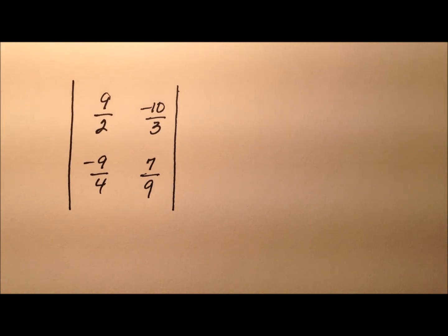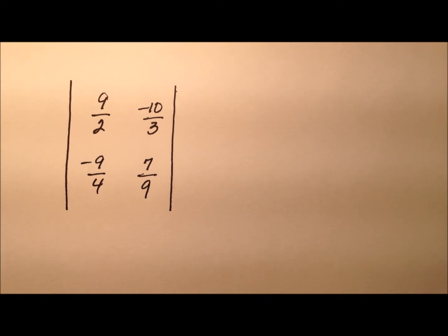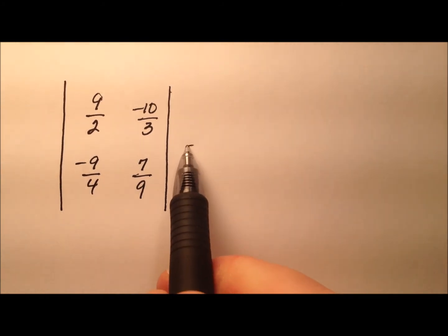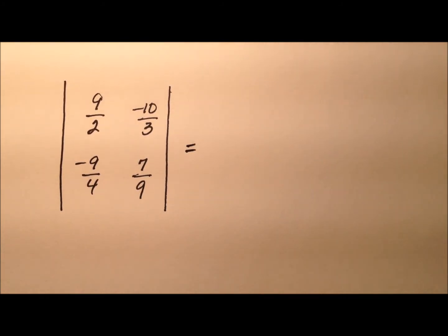In this example, we're going to evaluate this determinant, and it looks like we have a nice 2 by 2 square matrix. So, in order to evaluate this determinant, we need to do a couple of products, and then we'll subtract them.